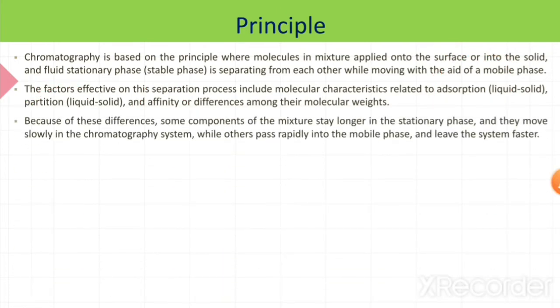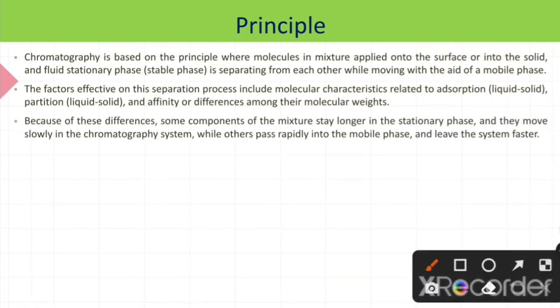Because of this difference, some components of the mixture stay longer in the stationary phase and they move slowly in the chromatography system, while others pass rapidly into mobile phase and leave the system faster. This totally depends on the properties or the characteristics of that specific component. Because of these characteristics, the component may separate out very fast or very slow.